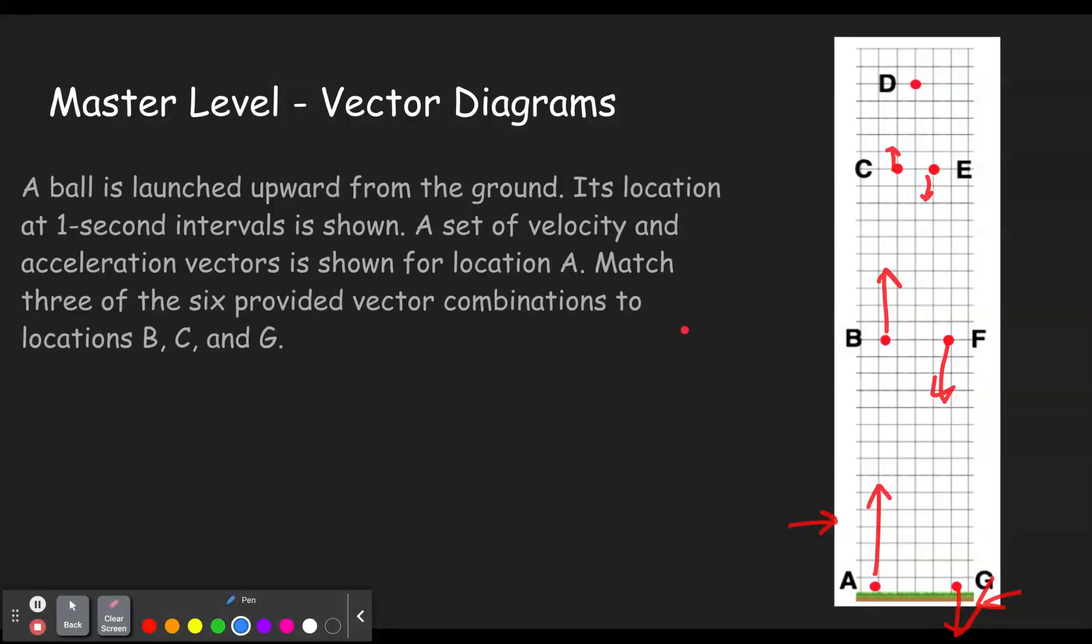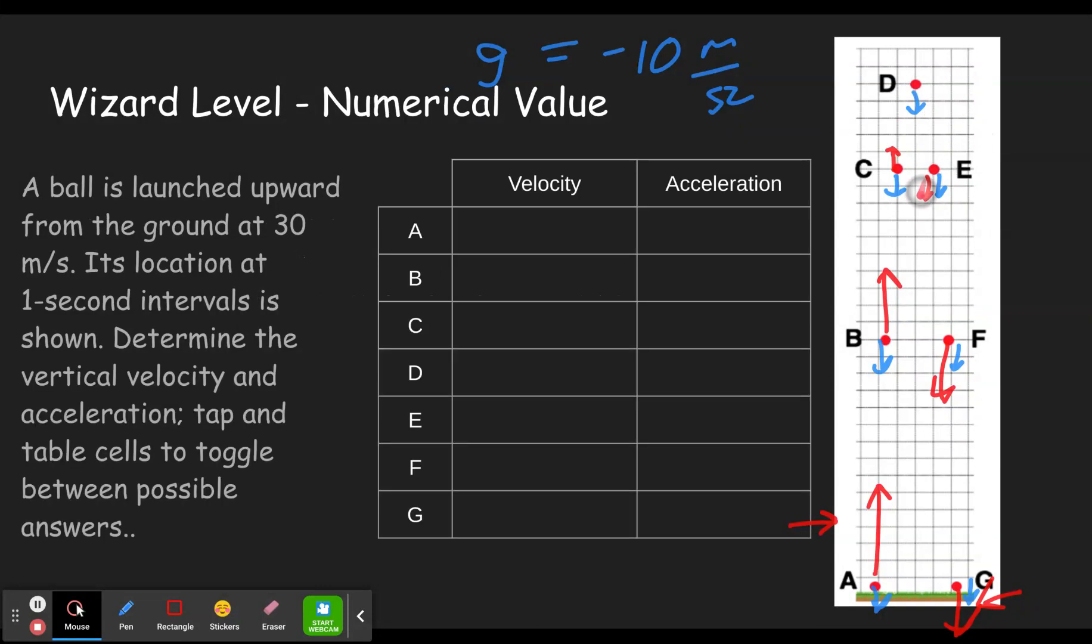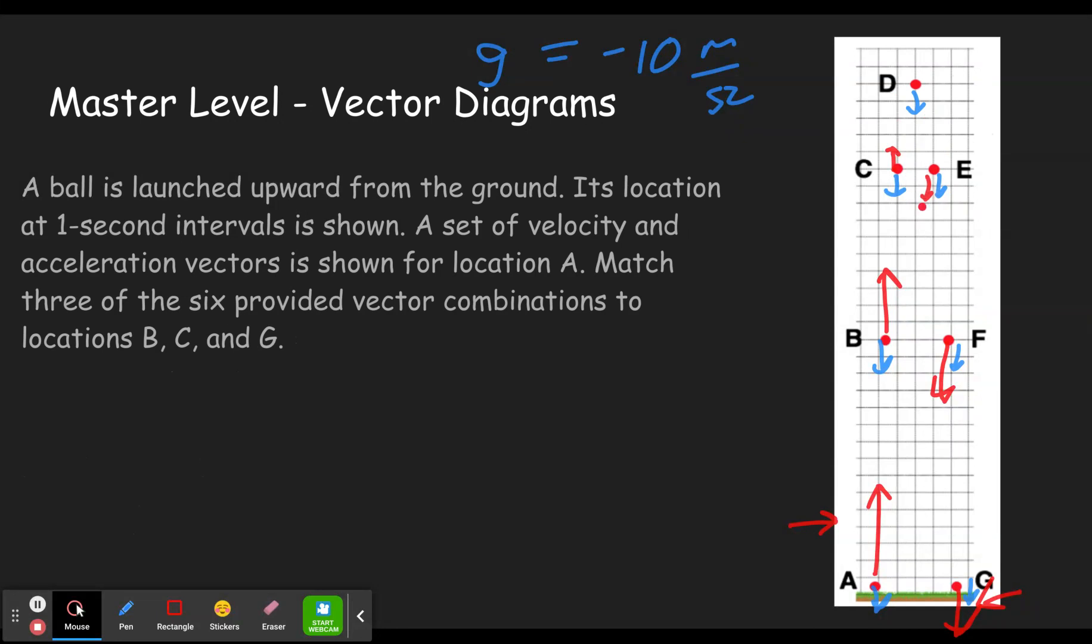Then we also have to draw the acceleration vectors. Well, we know acceleration is always down. And we know G is negative 10 meters per second squared. And so we draw the same sized downward velocity vector for every single one. It should always be the same size. One last little interesting fact. Since this is one second between D and E, if it's accelerating 10 meters per second squared, that means it's going from 0 meters per second to 10 meters per second. So this velocity vector should be the same size as this acceleration vector. Here it should be twice as long because it's had two seconds to accelerate. And here it should be three times as long. Same thing this way. This should be three times as long, two times as long, and the same length as the acceleration vector.